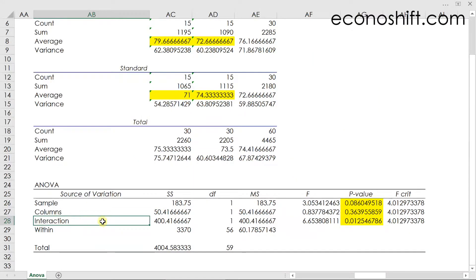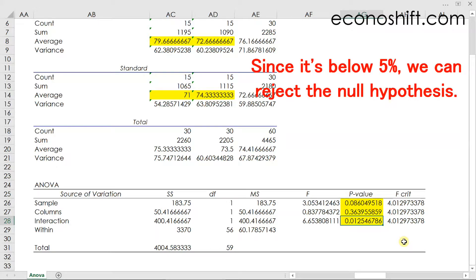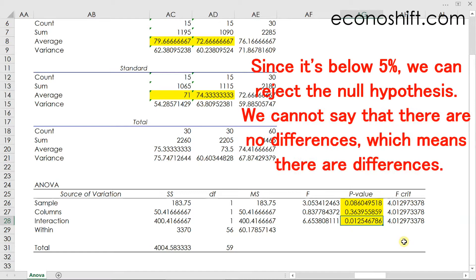Lastly, let's see the interaction below. Its p-value is 0.01, which is 1%. Since it is below 5%, we can reject the null hypothesis. In other words, we cannot say that there are no differences, which means there are differences.